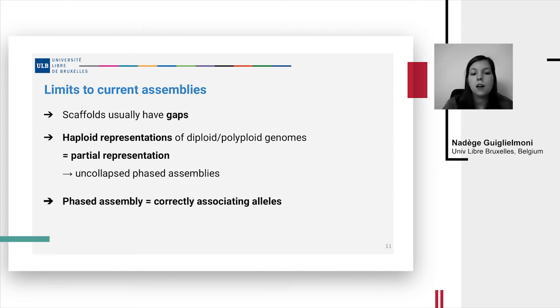But it's also quite difficult to obtain phased assemblies as we need to correctly associate alleles. And Hi-C can help with that as basically when you have two alleles from one haplotype they will have more interactions together than with alleles from the homologous chromosome.